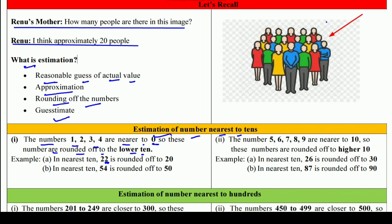For example, in nearest 10: 22 is rounded off to 20. यानि unit digit 2 है, जो five से कम है, इसलिए हमने 22 को 20 पर rounded off कर दिया। The numbers 5, 6, 7, 8, 9 are nearer to 10 — अगर unit place five या उससे ज़्यादा है, तो next वाले 10 पर। In nearest ten, 26 is rounded off to 30.